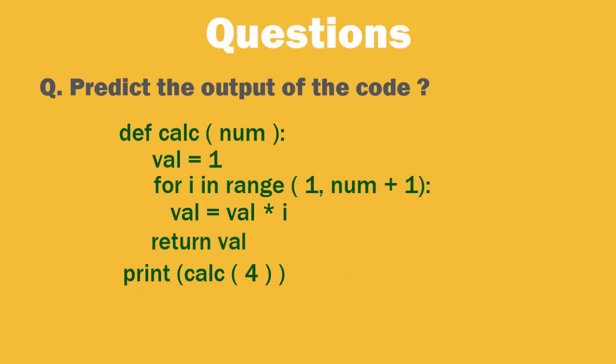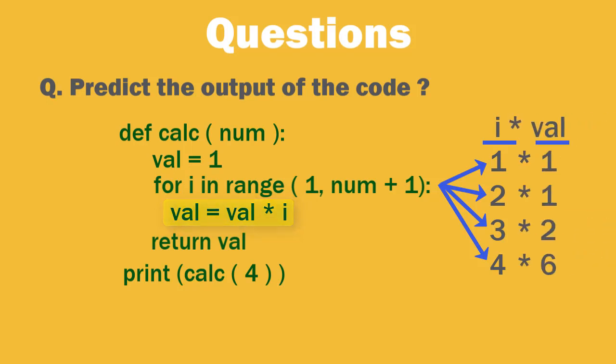Other kind of question is where you are asked to predict the output of some code. Like what is the output of below code. Here we see calc function is called with input parameter as 4. Inside the function, first val is initialized to 1. Then a loop is set up from 1 to 4. Inside the loop, val is multiplied by i every time. So at the end of the loop, the value of val is 24. After the loop, val is returned back which is printed as 24. So this is nothing else but a factorial program implemented in a function.